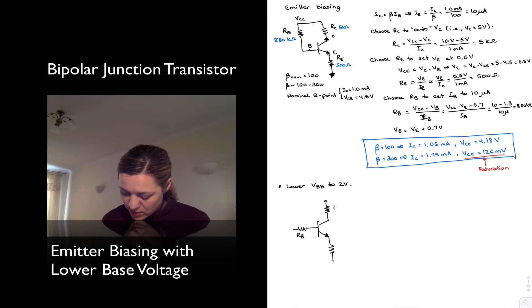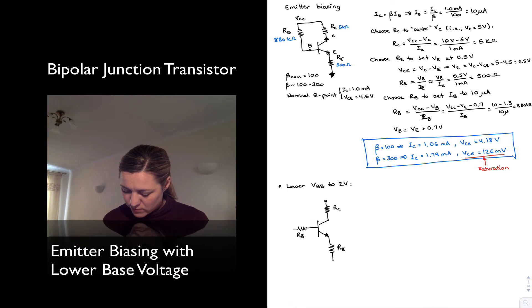So I have my Rb, Rc, Re. Again, it's emitter biasing because it has that emitter resistor. Now my Vcc is going to still be 10 volts, but my Vbb is going to be now 2 volts.